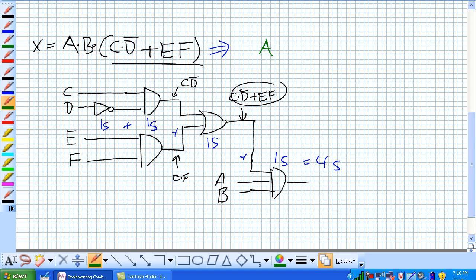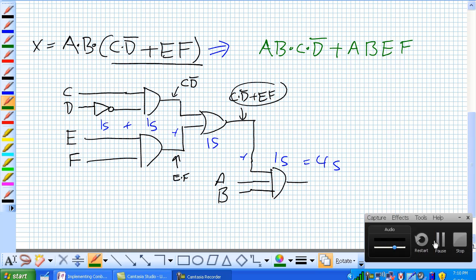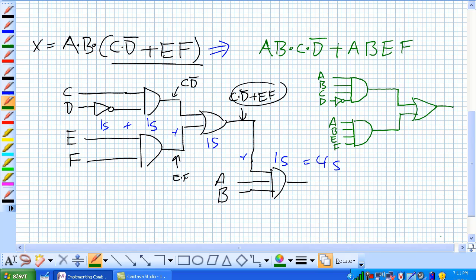Via the distribution properties, A and B and C and not D or A and B and E and F. So what have we done here? Well, we've simplified the circuit to look like this. And there you go.